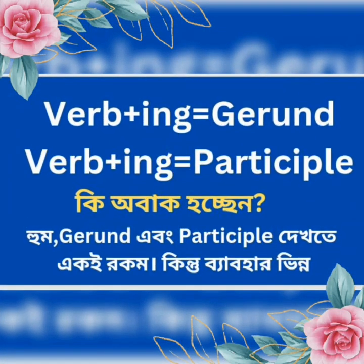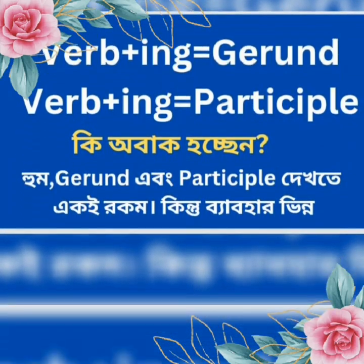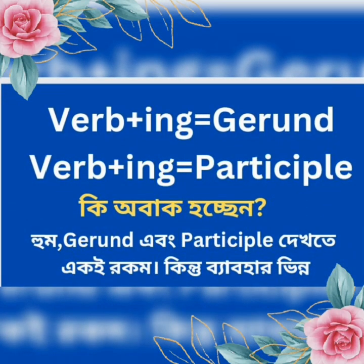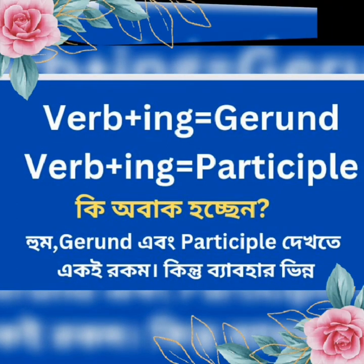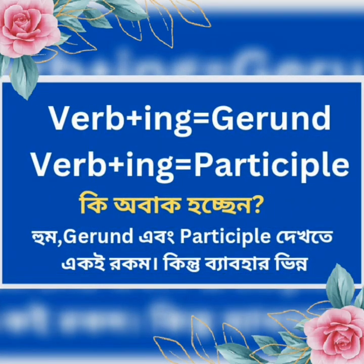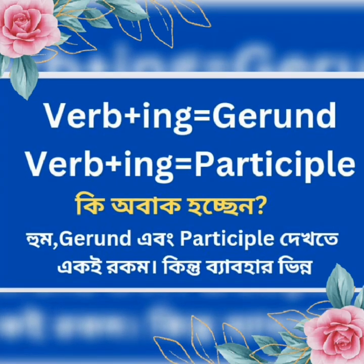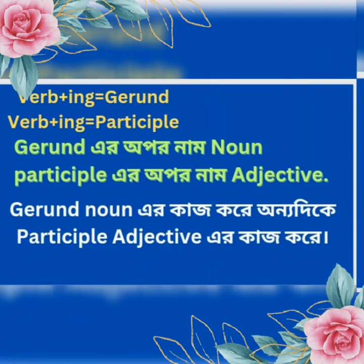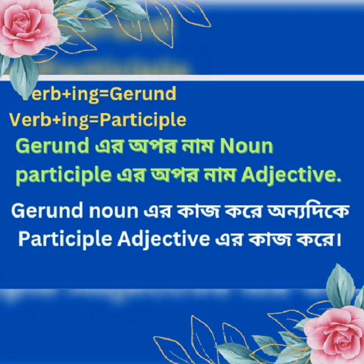Gerund and participle both look the same — both are verb plus -ing — but they differ in function. Gerund works close to a noun, whereas participle works close to an adjective.